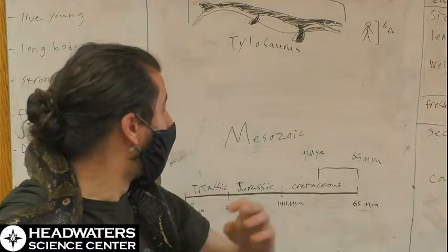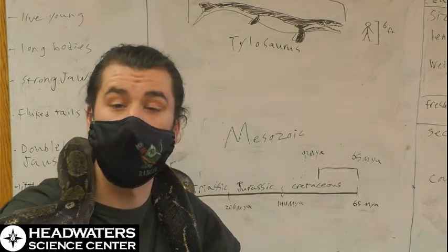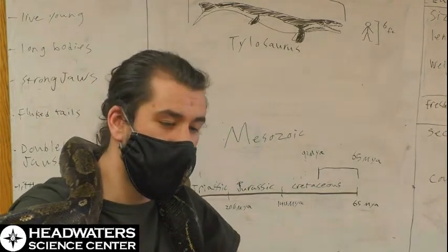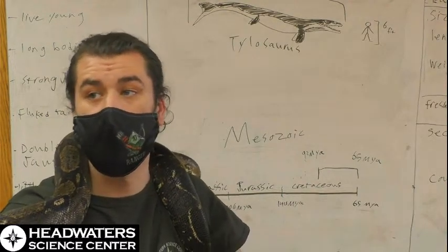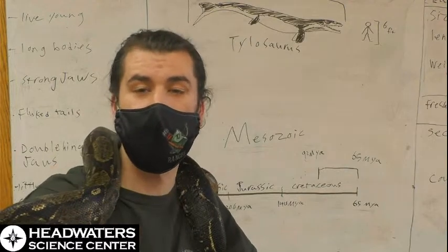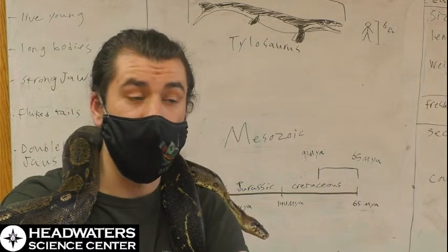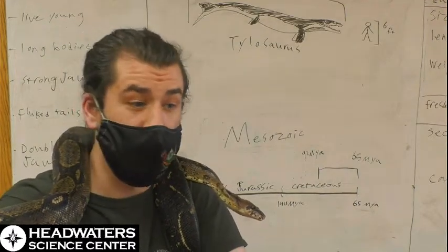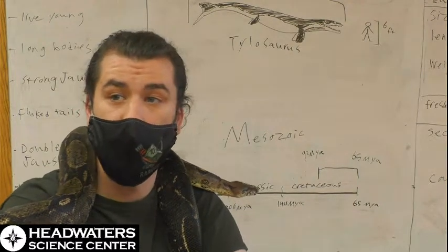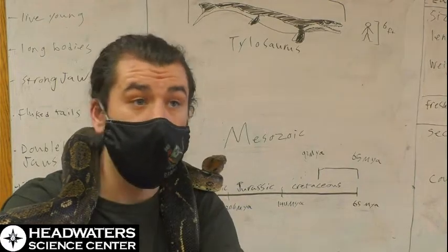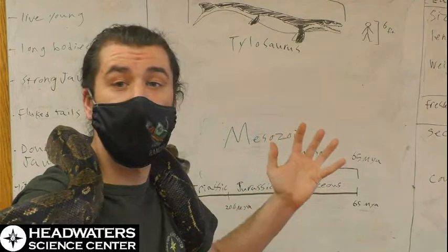Mosasaurs were also quite well represented in what we call the inland sea of North America of the Cretaceous. During the Cretaceous, much of central North America was under a shallow sea due to ocean levels being quite high due to very warm temperatures worldwide. The Cretaceous is one of the hottest times in Earth's history, and there were pretty much no permanent ice caps at the poles. While there was seasonal snow in some areas, there was no permanent ice cap.